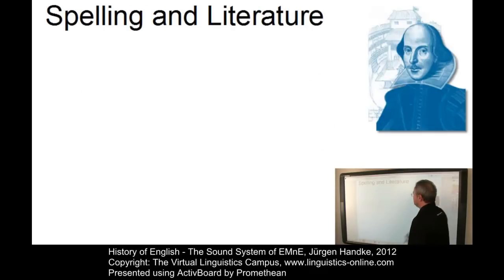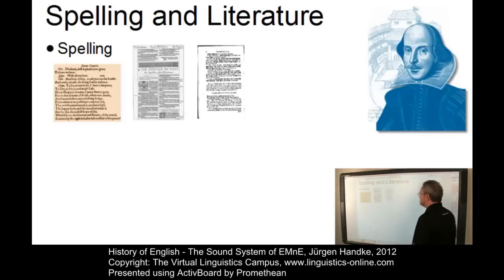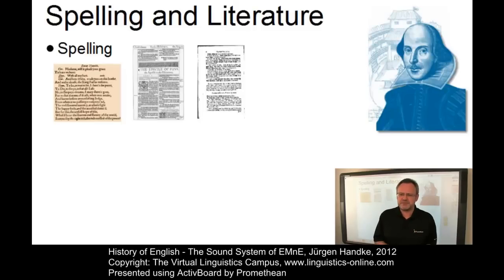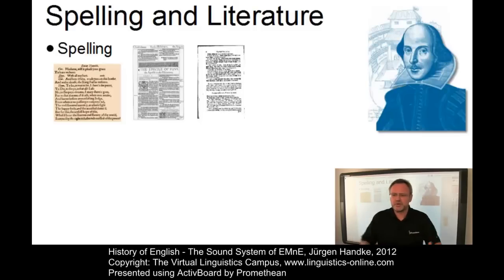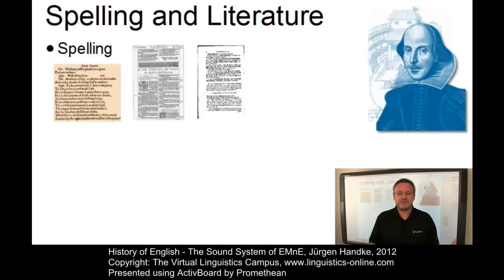Most spelling patterns were formulated in their essential details during Late Middle English and Early Modern English. By the end of the 17th century, the principle of a fixed spelling for every word was firmly established for printed works, and over the course of the following century personal spelling followed suit. So by the end of the 17th century, modern patterns of spelling and punctuation had been established.